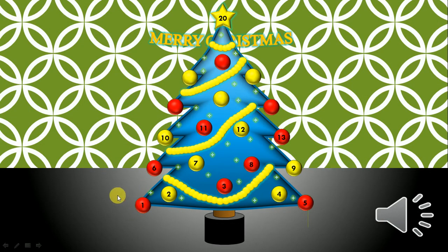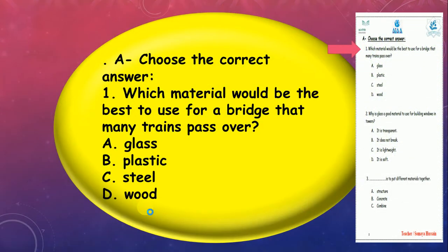As usual, we have this Christmas tree game, so let's start. Number 1, you're gonna find in page 2, number 1: Choose the correct answer. Which material would be the best to use for a bridge that many trains pass over? Glass, plastic, steel, or wood?